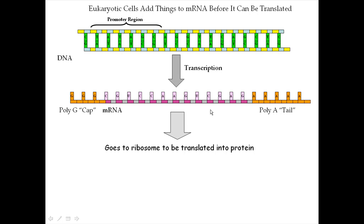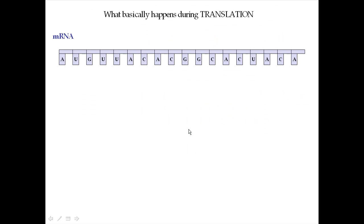What we just looked at is how transcription happens, and so what we'll do now is take a look at how translation occurs. Before we look at the details, we'll just give you a general idea of what translation involves. The goal of translation is to make the protein, and in order to make the protein, what the cell reads directly is this messenger RNA molecule.